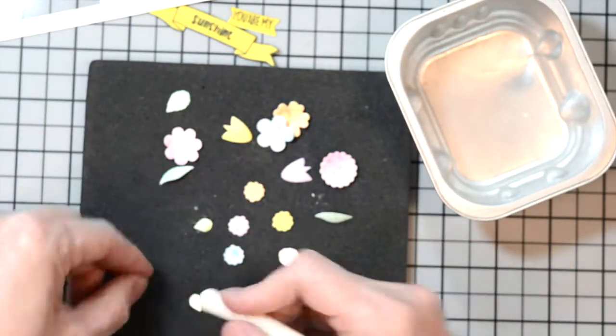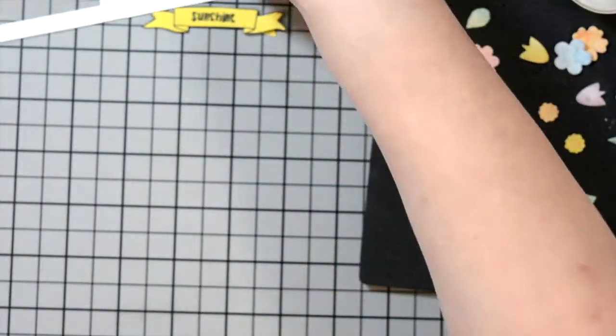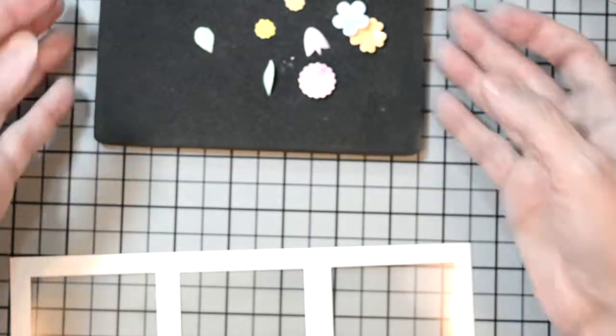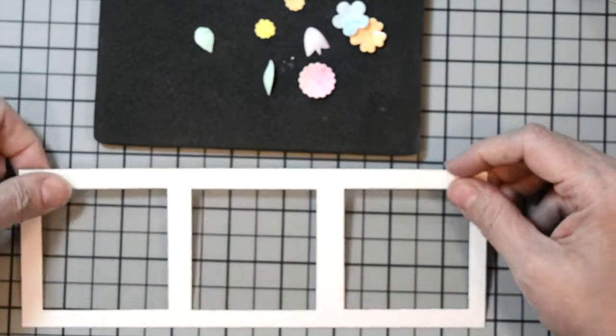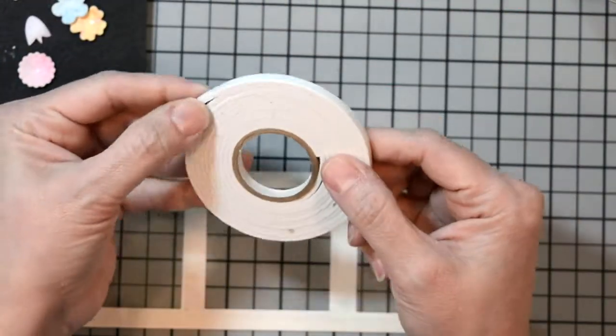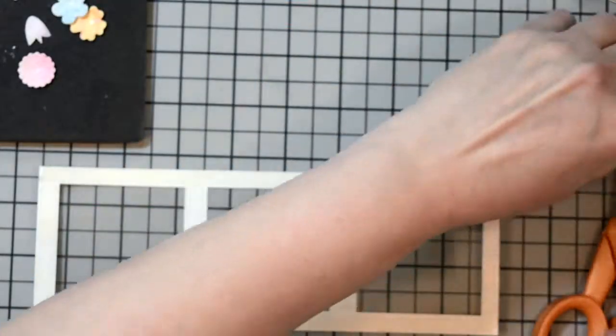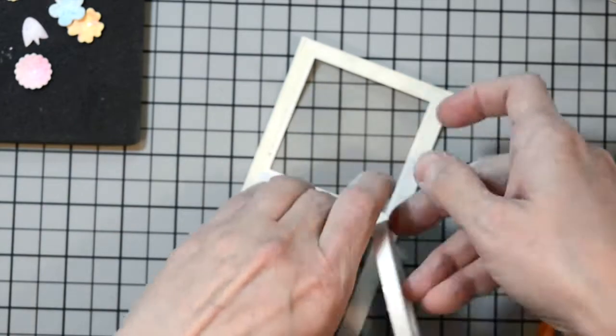Now, I'm going to set these aside, along with our sentiment, and we're going to work on our panel. We need to add some foam adhesive all around the perimeter and those center sections to create the boxes for our shaker.